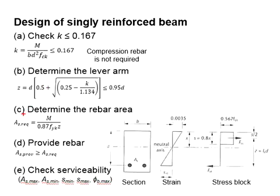Next, we determine the reinforcement bar area by using this equation. M represents the moment load. Fyk represents the nominal yield strength of the rebar. The Z you obtain from this equation.